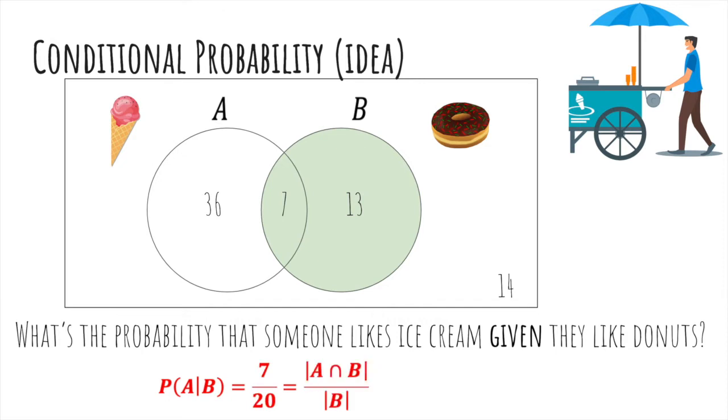What we just did is we looked at the size of the intersection, the people who like both ice cream and donuts, and divided by the size of the people who like donuts. If we divide both top and bottom by the size of the sample space, we can write this as the probability of A and B divided by the probability of B in the case of equally likely outcomes.